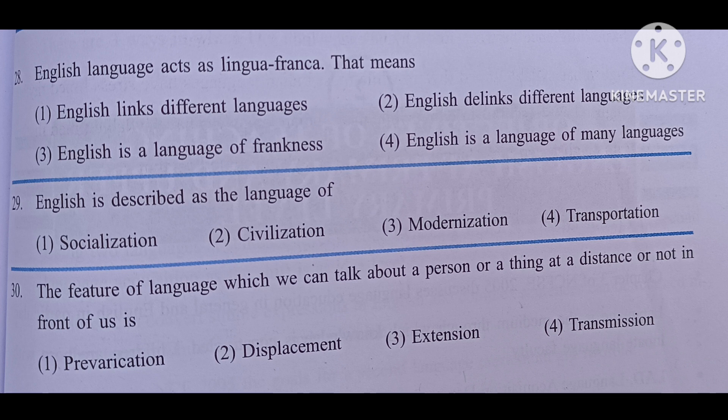English language acts as a lingua franca — that means: number one, English links different languages; number two, English de-links different languages; number three, English is a language of frankness; number four, English is a language of many languages. The answer is English links different languages.